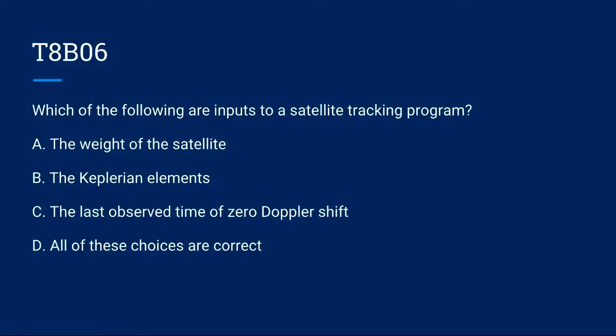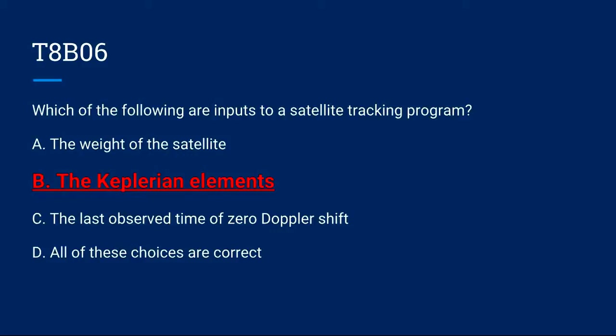T8B06: Which of the following are inputs to a satellite tracking program? A. The weight of the satellite. B. The Keplerian elements. C. The last observed time of zero Doppler shift. Or D. All of these choices are correct. The correct answer is B: the Keplerian elements.